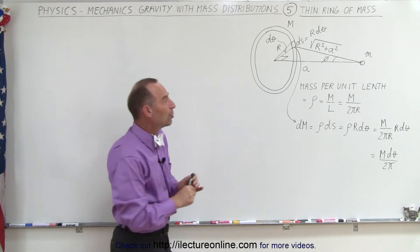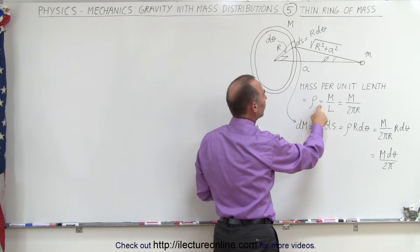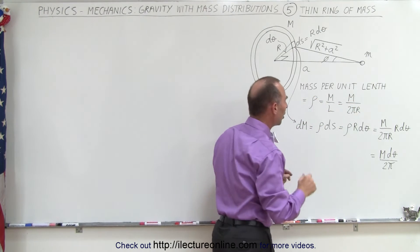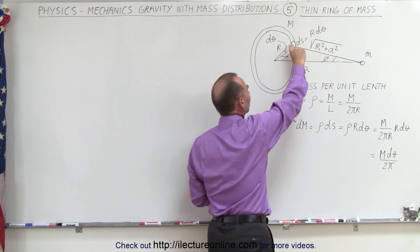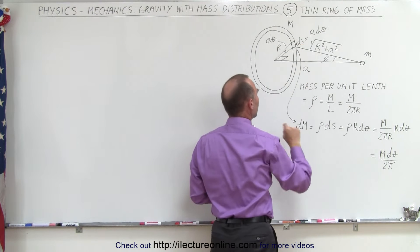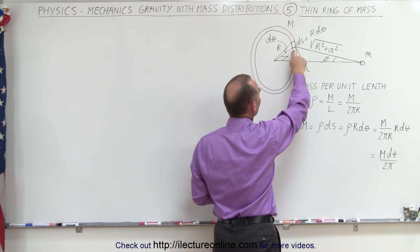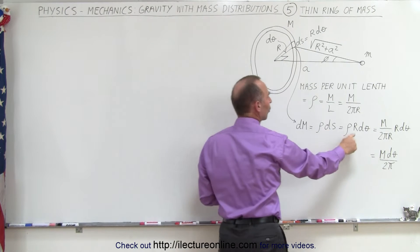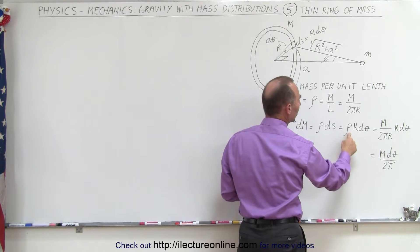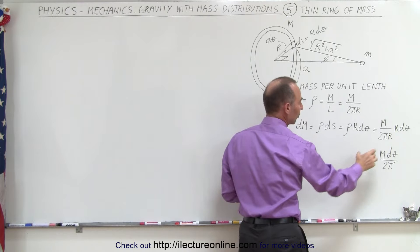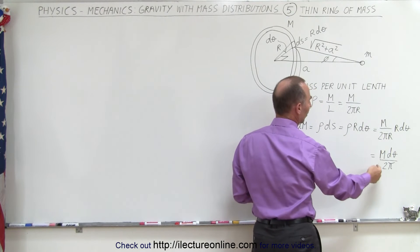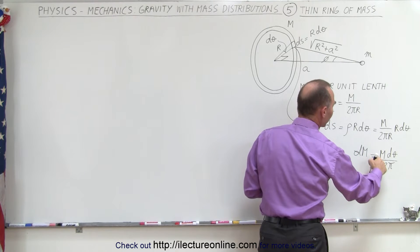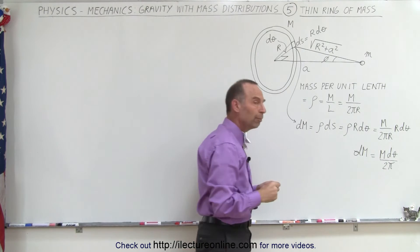To calculate the mass per unit length, call it rho, that is equal to the total mass divided by the total length of the ring, which is M divided by 2πr. The mass of a small segment dm is equal to the mass per unit length times the length of that small segment ds. Since ds is r times dθ and the mass per unit length is M divided by 2πr, the r's cancel out. So dm equals M dθ divided by 2π.